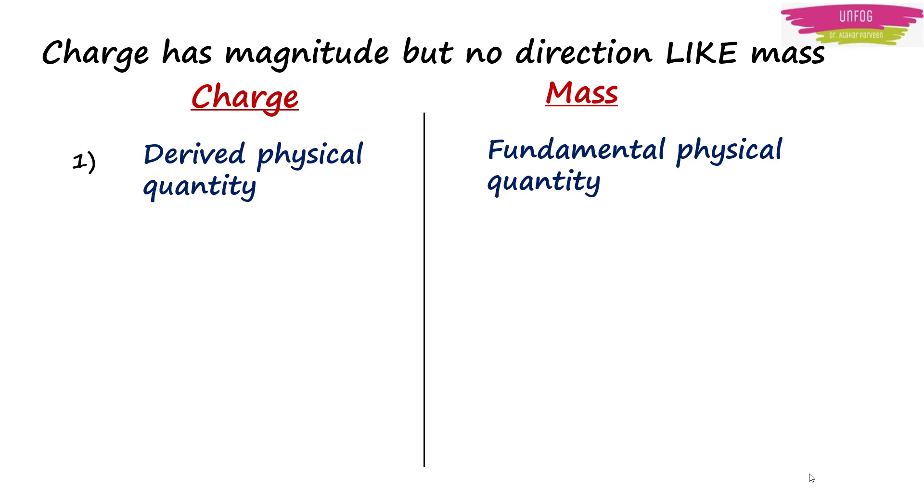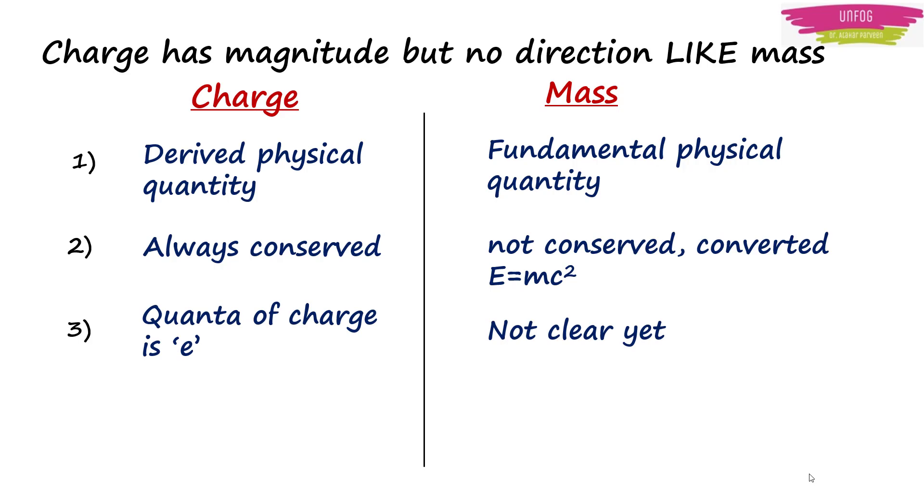Like, charge is a derived physical quantity whereas mass is a fundamental physical quantity. Charge is always conserved but mass is not conserved. In fact, mass can be converted into energy using Einstein's E = mc^2. Quanta of charge is electronic charge while that of mass is not yet clear. For a moving charged body, charge remains constant while mass increases.